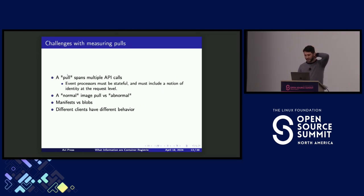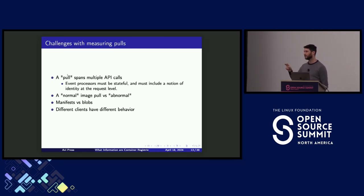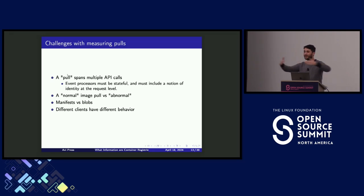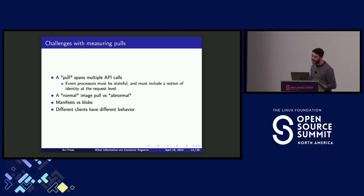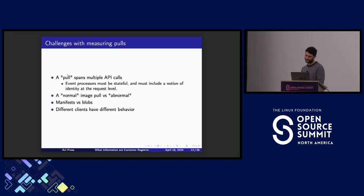There are a few things that are hard about this. Obviously if we want to count these things, we have to span multiple API calls. If you see one or two manifest requests, you have to do some work to figure out if that was one or two polls, and it's contextual. If these things are being routed to different servers, you now have to have time series context in order to really do pull counting as the specs describe. What makes this really really hard is that different clients are going to respect the OCI standard to different degrees.